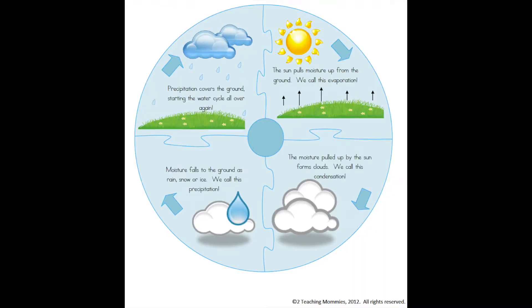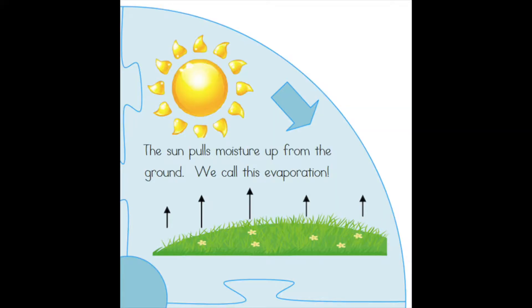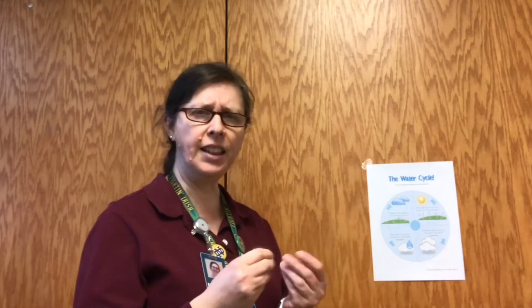I found this wonderful diagram on the website Two Teaching Mommies and it explains the water cycle. First we start off with the sun during the day pulling moisture up from the ground — where the grass is, where ponds and lakes are. It's so warm that it's pulling the moisture of the liquid water that's in a pond, lake, river, or on your grass. When the sun pulls that liquid water up into the air, it's called evaporation.